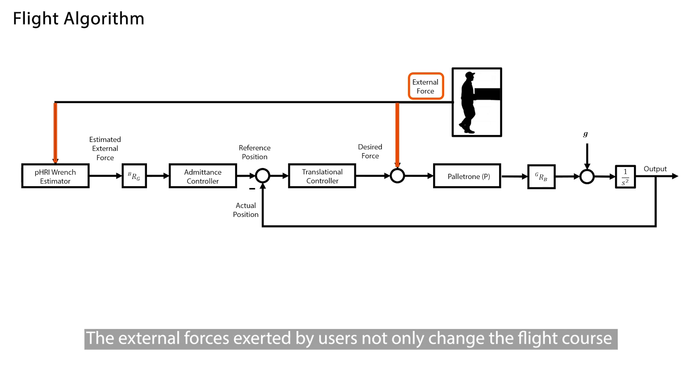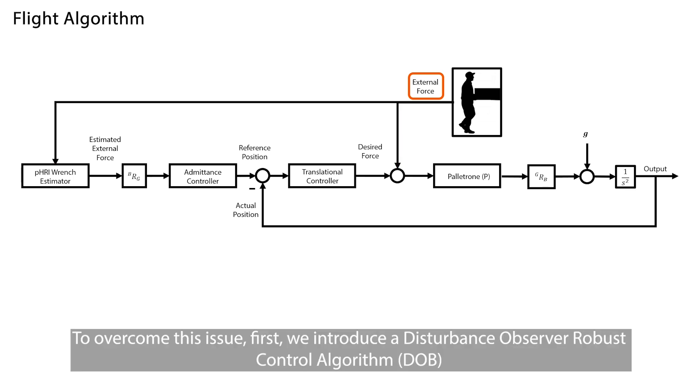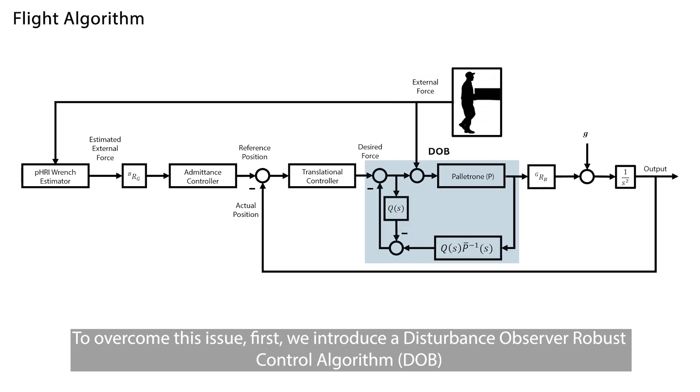The external forces exerted by users not only change the flight course but also hinder the flight control wrench generation process, resulting in inaccurate flight control. To overcome this issue, first, we introduce a Disturbance Observer robust control algorithm, which estimates and compensates for external forces in subsequent control iterations.